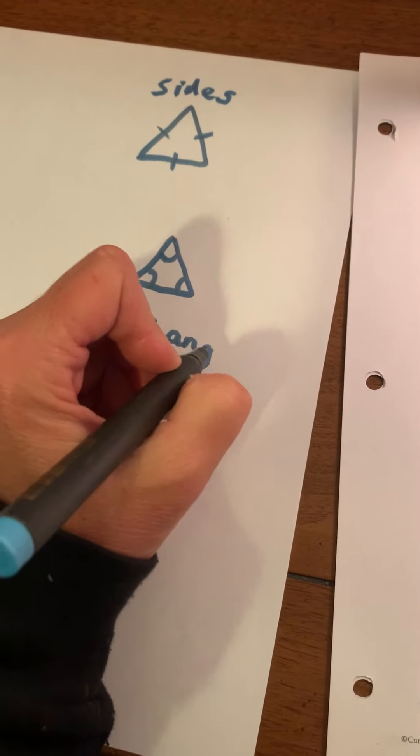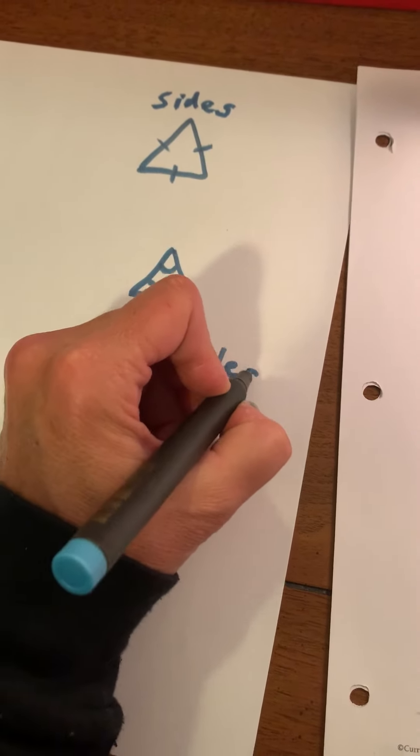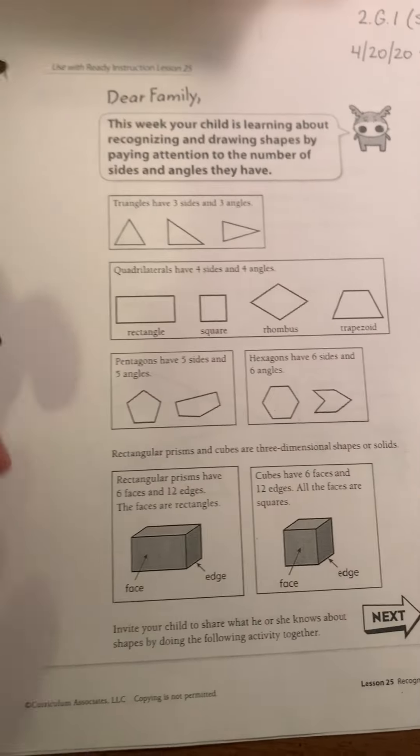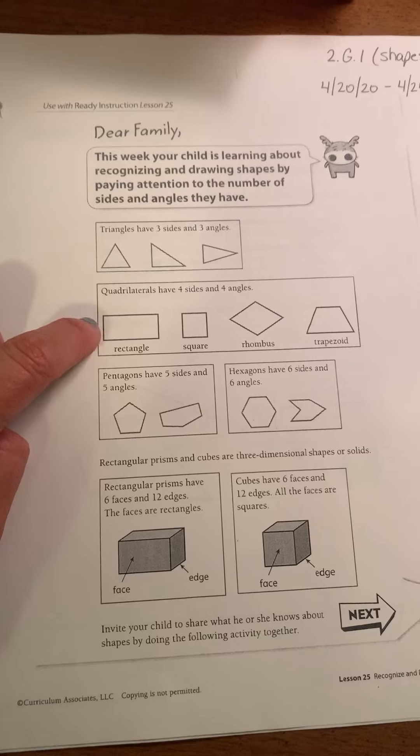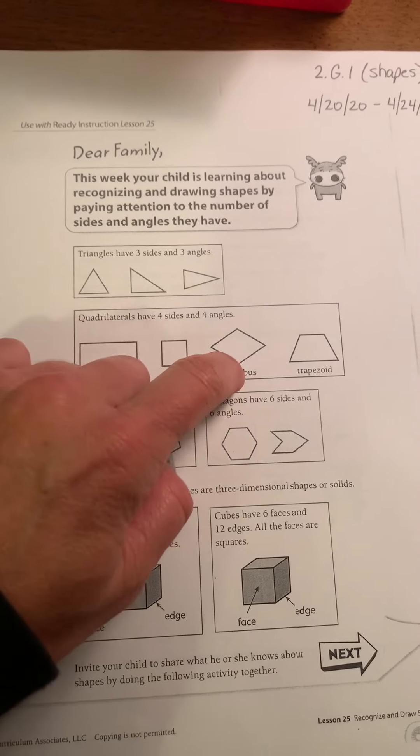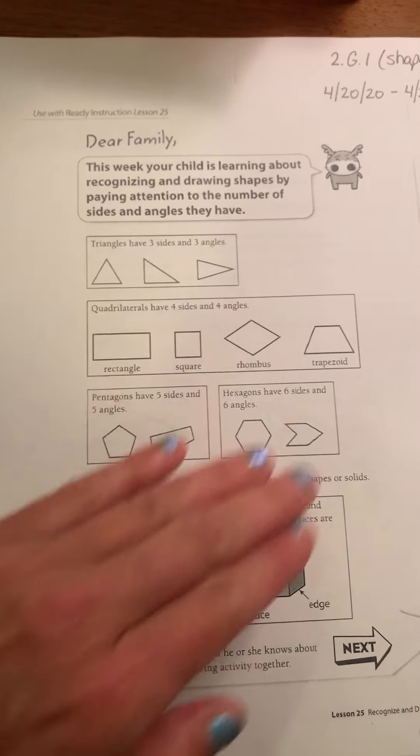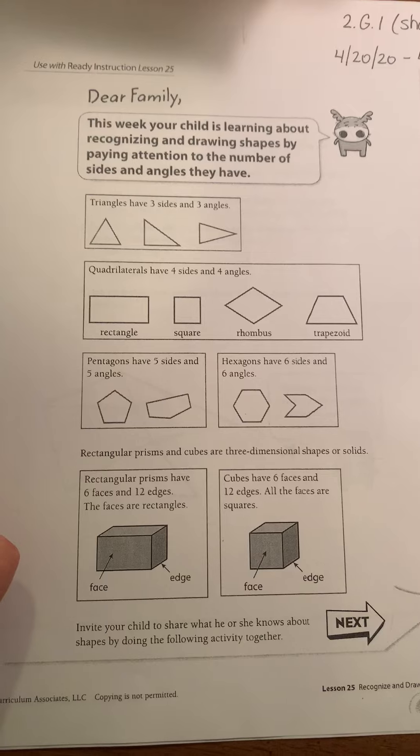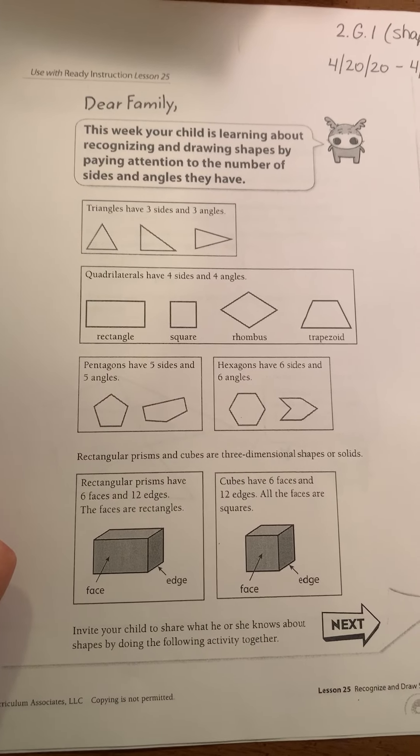And then as you look down the sheet, that's just the triangle. But as you look down the sheet, there's some other shapes that your child can practice drawing. Rectangles, squares, rhombus. They can count the sides and the angles for you on the pentagons and the hexagons.